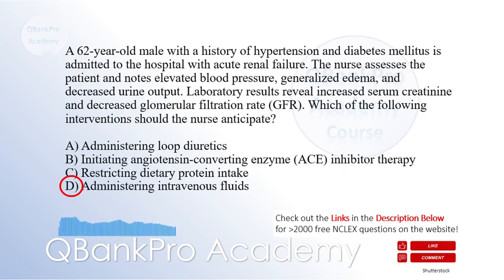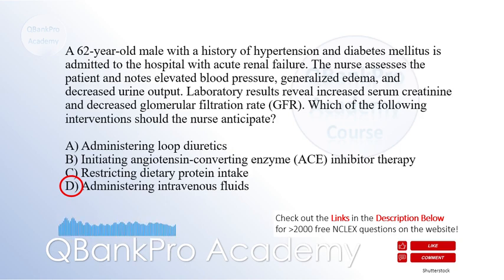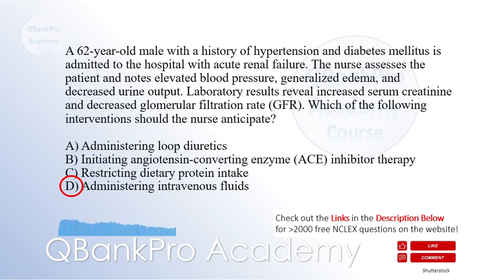ACE inhibitors may be used in chronic kidney disease but are contraindicated in acute renal failure. Restricting dietary protein intake may be beneficial in some cases of chronic kidney disease but is not the primary intervention for acute renal failure.